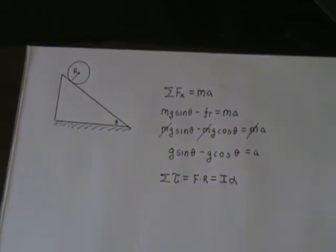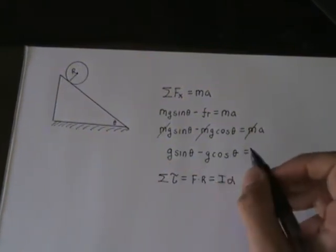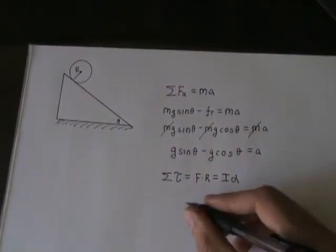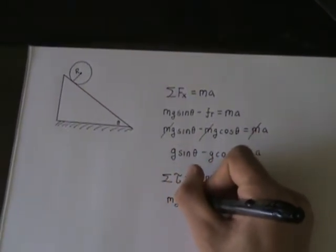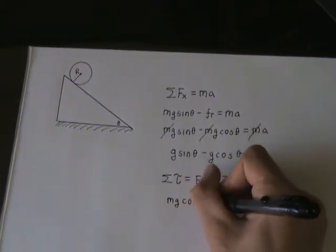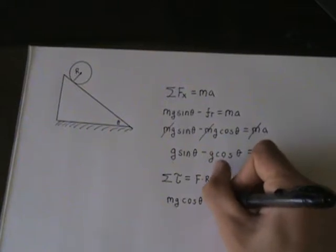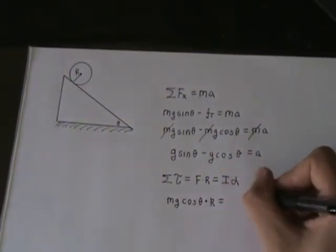As I mentioned before, friction is the one causing, friction is the torque on the object. Therefore, the force of friction causing the torque would be given by mg cosine theta. This is the force, mg cosine theta. This represents the force times the radius is equal to I alpha.